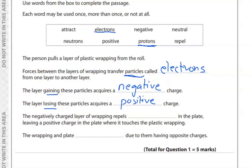A negative charge layer of wrapping repels — negative charge means electrons. Like charges repel, so the negative charge layer repels electrons in the plate, leaving a positive charge in the plate where it touches the plastic wrapping.